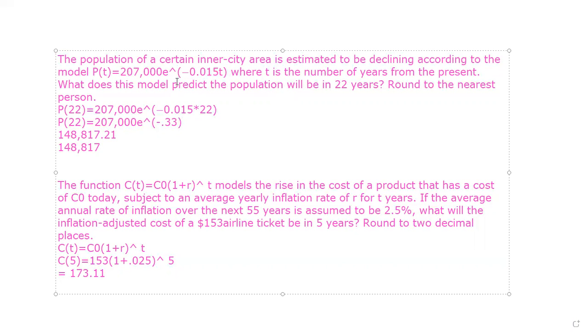So we've got this model where t is the number of years from the present. Now this is really important because this tells you what you're going to be plugging in. So t is the number of years from present. What does this model predict that the population will be in 22 years? Well that's 22 years from the present. So that means that we are going to be plugging in 22 for this little t right here. And remember e is a button on your calculator and so you have everything that you need.